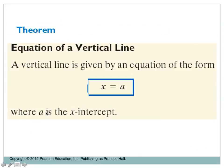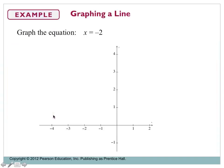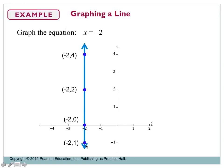The equation of a vertical line has the form x = a, where a is the x-intercept. To graph x = -2, plot the x-intercept at -2 and draw a vertical line through it. Any equation of the form x = (a number) produces a vertical line.